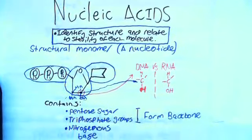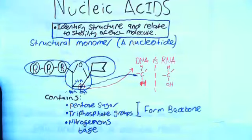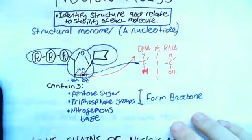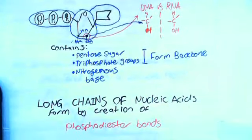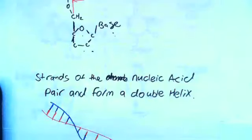We have our nucleotide: it has a pentose sugar, a triphosphate group, and together they form the backbone. We have our nitrogenous base hanging off the side which can be one of several examples. Long chains of nucleotides are called nucleic acids.